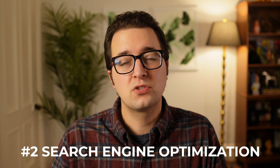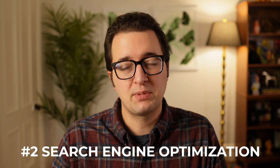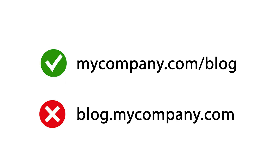Reason number two: search engine optimization. If you have a SaaS, you should have a blog. If you have a blog, it should be part of your company domain, not part of your subdomain. For example, your blog article should reside at mycompany.com/blog, not blog.mycompany.com. This will give you a significant SEO boost.